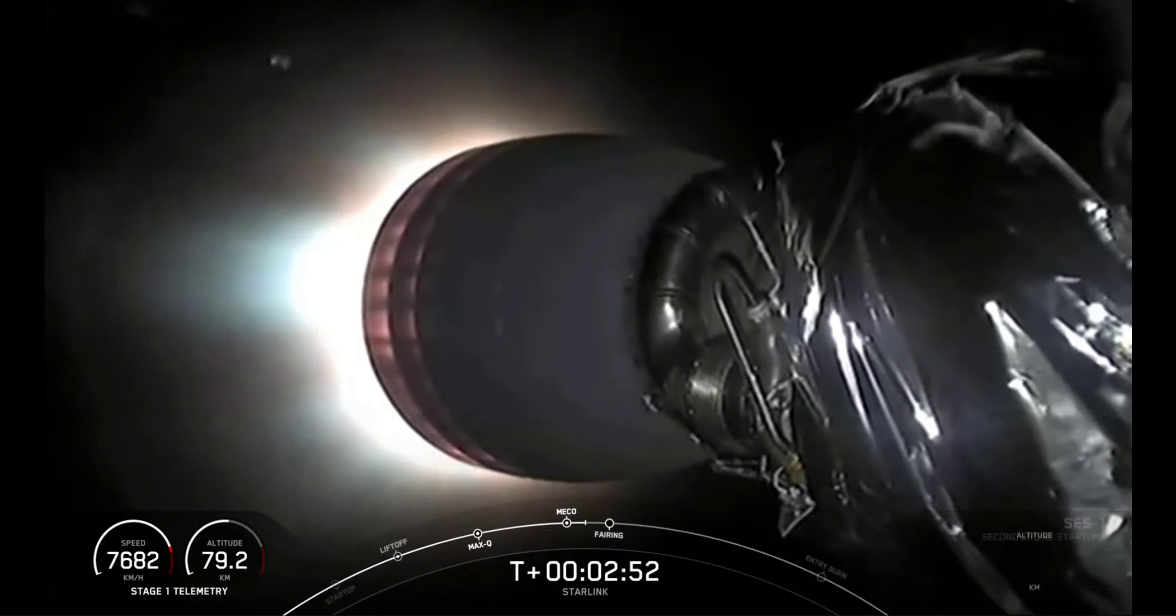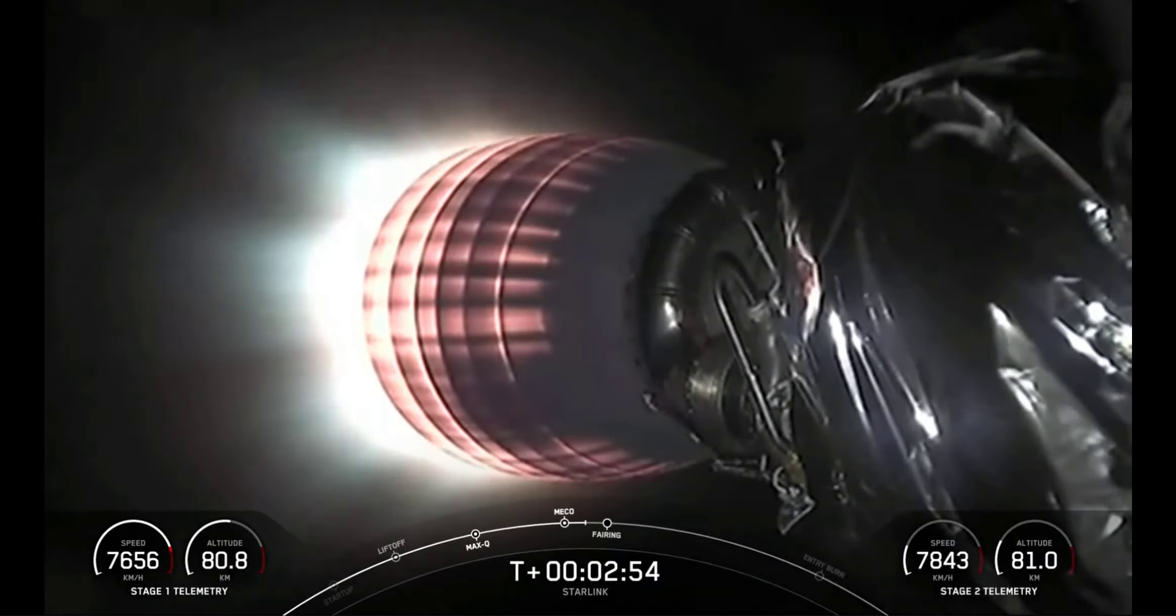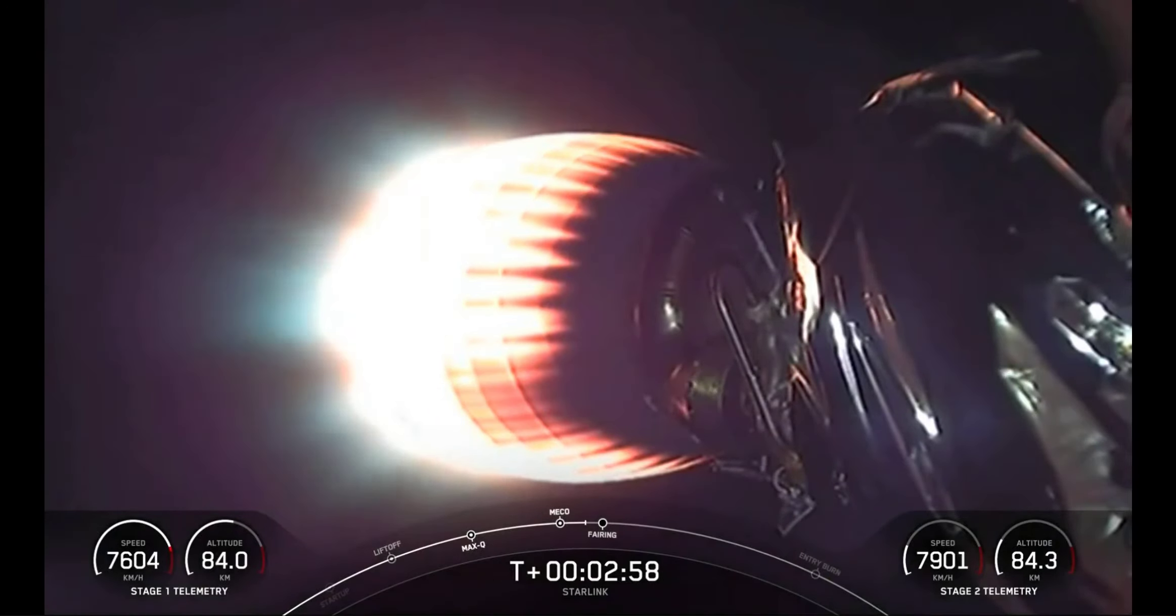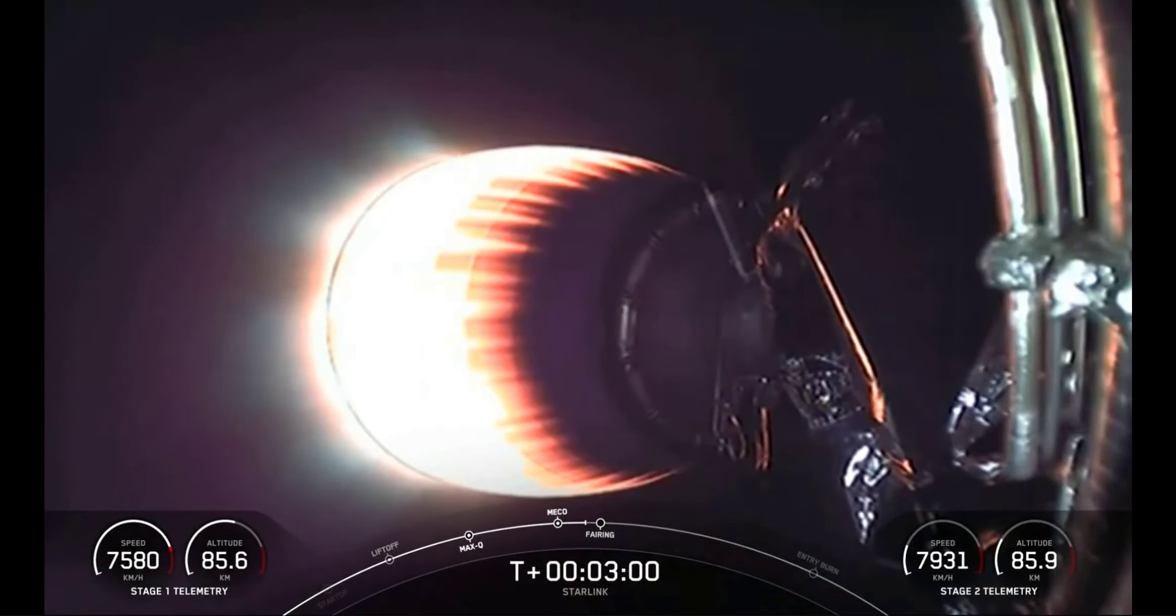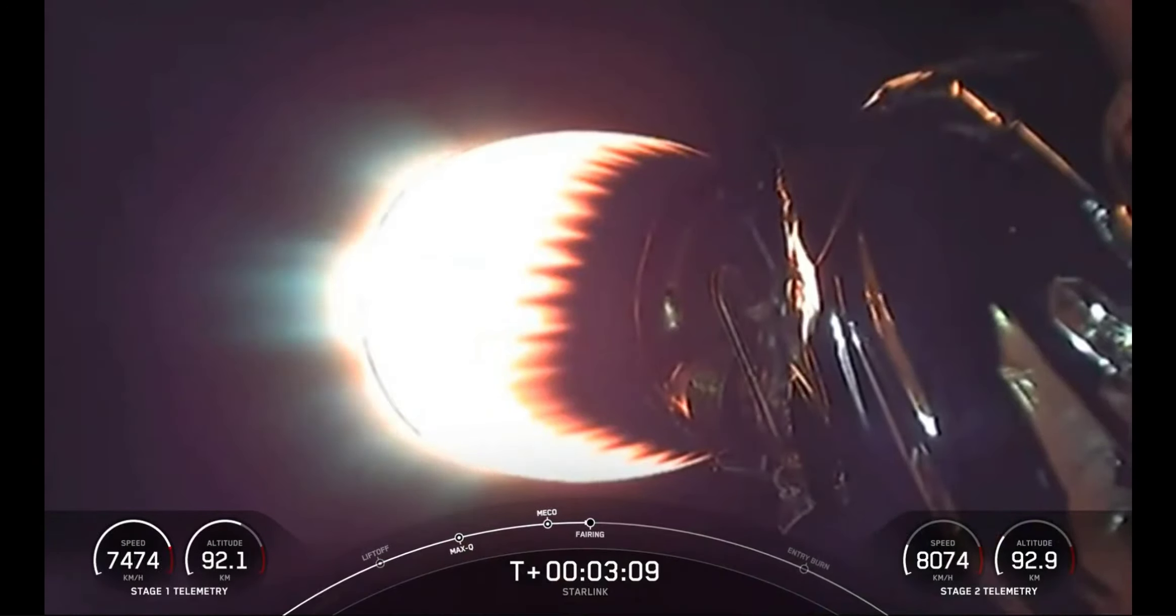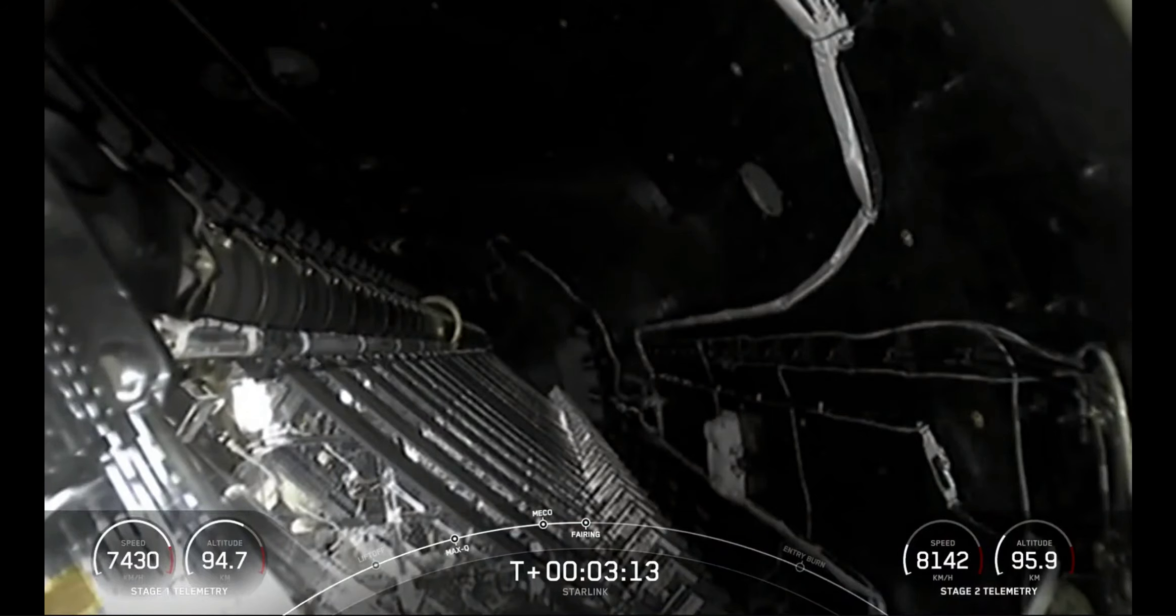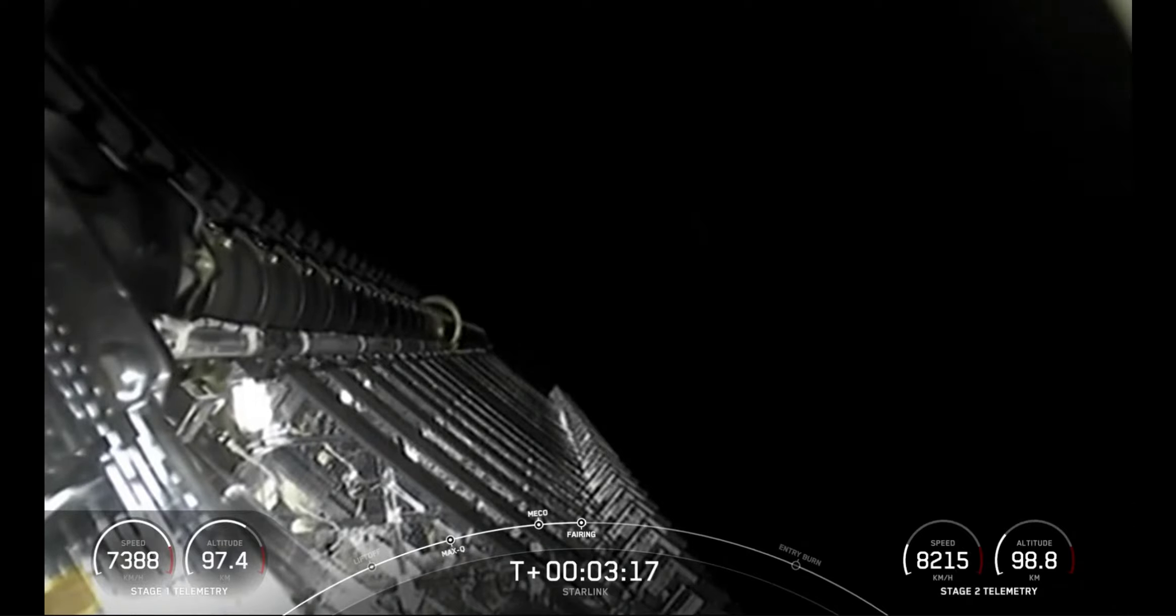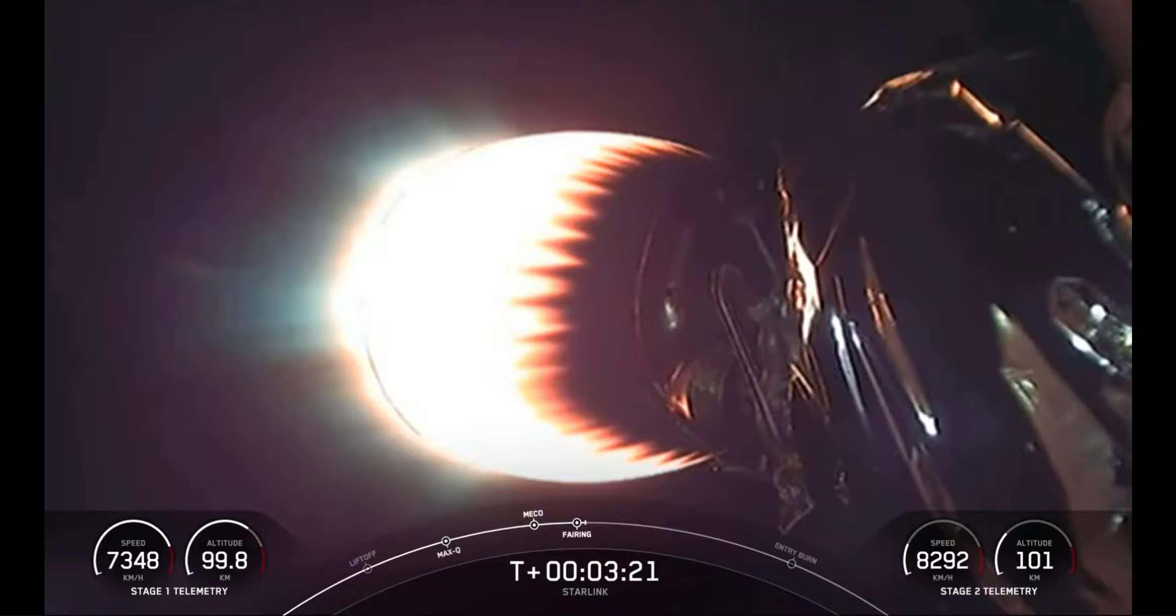MVac ignition. And you saw the visuals on screen. The first stage separated from the second stage, making its way back to Earth. And we have a beautiful startup of the Merlin vacuum engine on the second stage. Coming up in a few seconds here is fairing deploy. Fairing separation confirmed. And off goes the fairing halves, exposing the batch of Starlink satellites on top of the second stage.